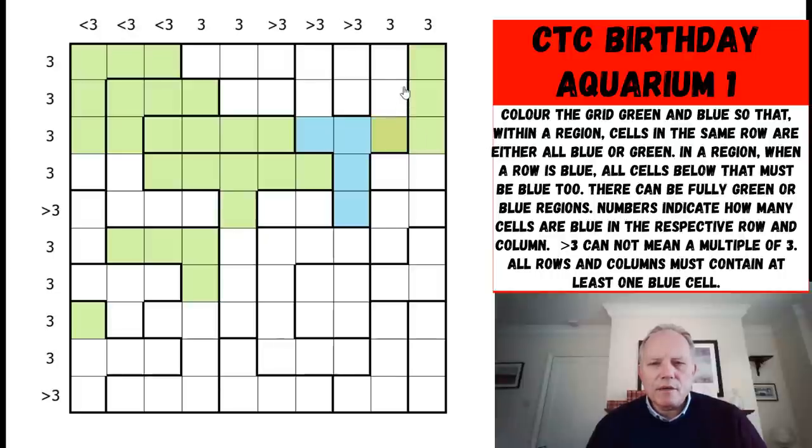Three is the maximum in column nine and we've got one already. This can't be blue because if there were two blues in this shape, they'd be at the bottom. Now row two, there are five cells, but these two are in the same shape. So they have to be the same. So it could be those two being blue with that one or these two being blue with that one. Either way, that one's blue.